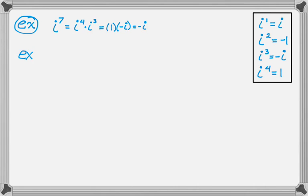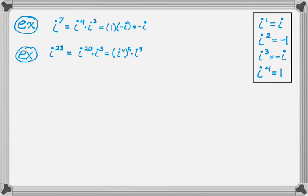Let's take a look at another example: i to the twenty-third. Remember, I'm looking for i to the fourth to be used here. I'm going to make i to the twenty-third into i to the twentieth times i cubed, because i to the twentieth can be written as i to the fourth, raised to the fifth, times i cubed. A lot of properties of exponents are being used here. Remember, if you have an exponent raised to an exponent, you multiply the exponents — that's why i to the fourth raised to the fifth gives i to the twentieth.